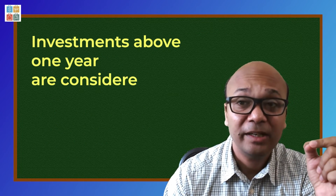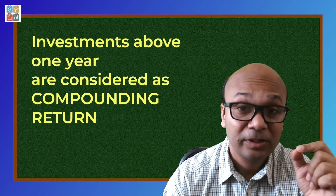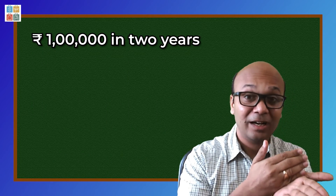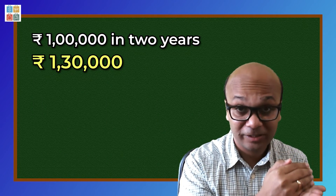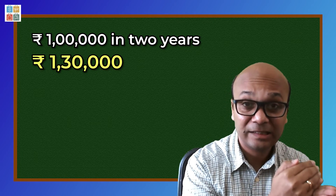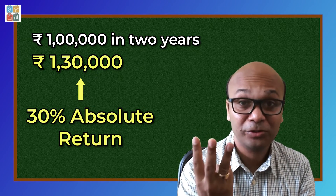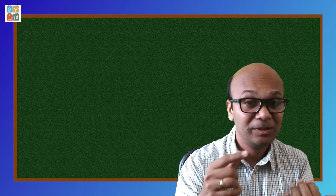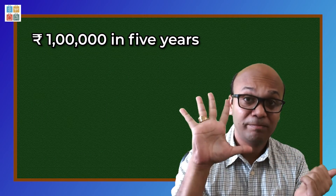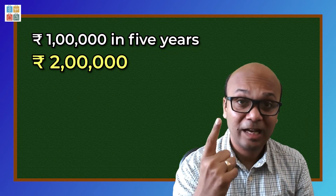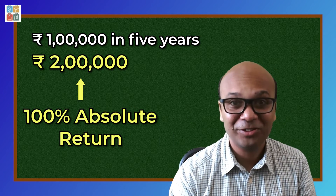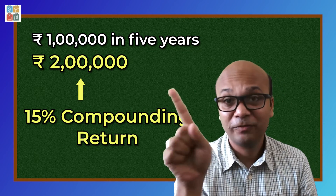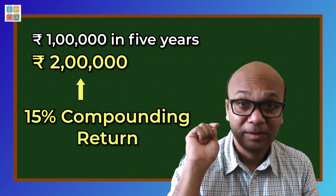Compounding return उसे extrapolate कर देगा — 5% in 2 months becomes 30% annualized — but logically actual return सिर्फ 5,000 रुपए था। इसलिए एक साल से ऊपर की duration में compounding returns consider करें। Last few thoughts: 1 lakh becomes 1 lakh 30,000 in 2 years — that's 30% absolute, but only 14% compounding. 1 lakh becomes 2 lakhs in 5 years — 100% absolute, but only 15% compounding.